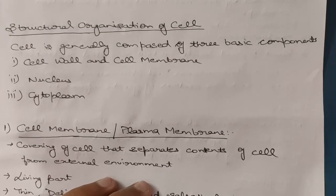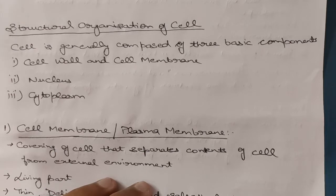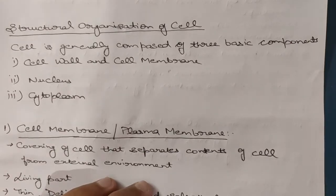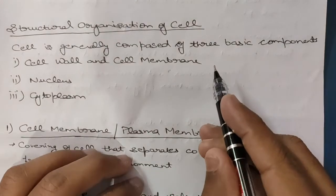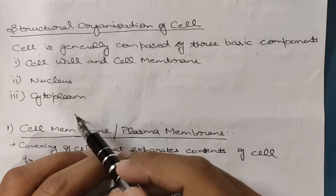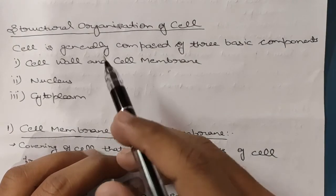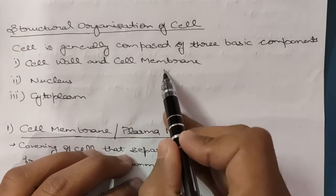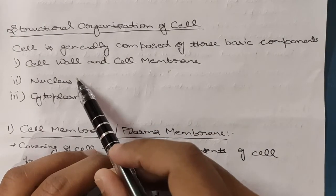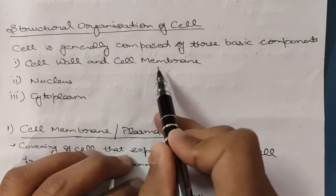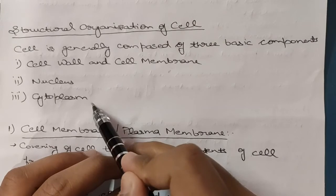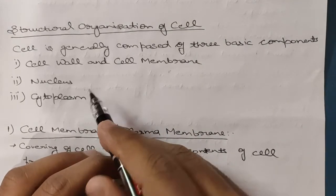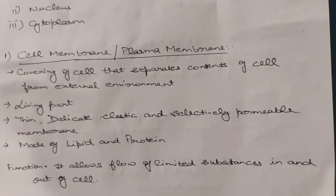Hello students! In the previous video we discussed types of cells, and now we will be starting structural organization of the cell. Cell is generally composed of three basic components: cell wall, cell membrane, nucleus, and cytoplasm. More precisely, almost every cell contains cell membrane, nucleus, and cytoplasm — there are some cells in which cell wall is absent.